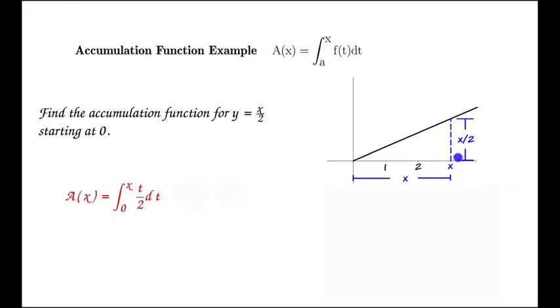The area of a triangle is base times height over 2. So it's x times x over 2 divided by 2. That's the base times the height divided by 2, which simplifies to x squared over 4.